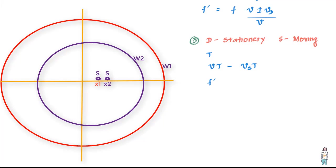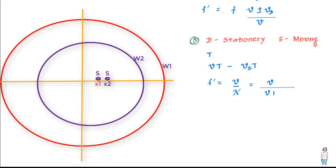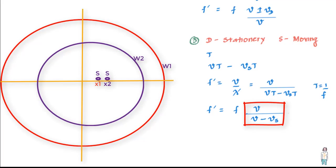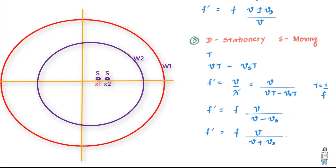The frequency detected by the observer is F' = V upon lambda', and lambda' equals VT − Vs·T. Substituting T = 1/F gives F' = F times V upon (V − Vs). F' is greater than F since V/(V − Vs) is greater than one, unless Vs equals zero in which case F' equals F. If the source moves away from the observer, F' = F times V upon (V + Vs), and F' is always less than F. I encourage you to do that derivation yourself.